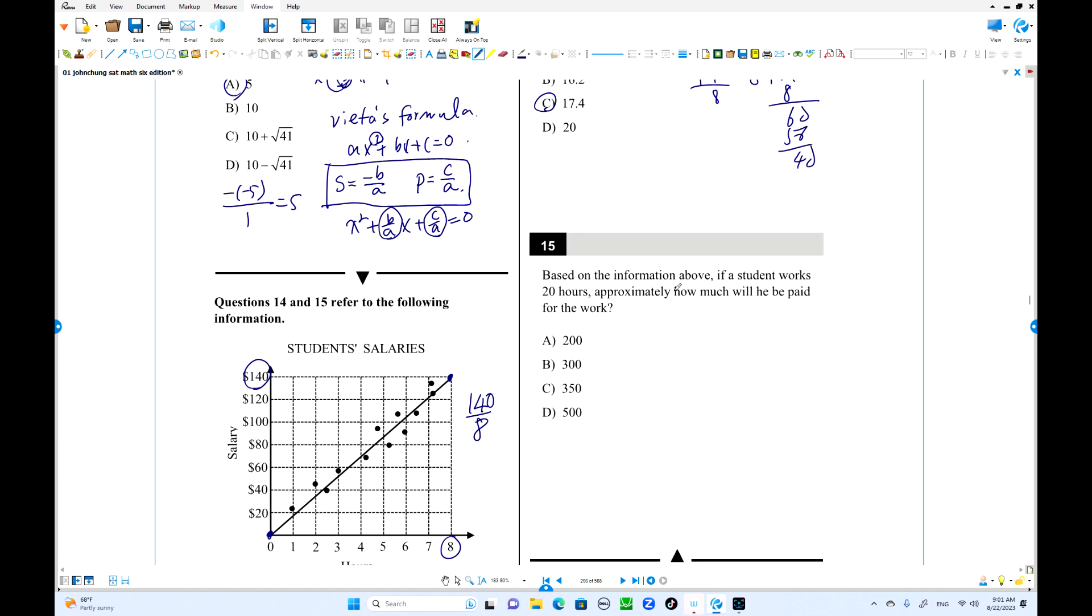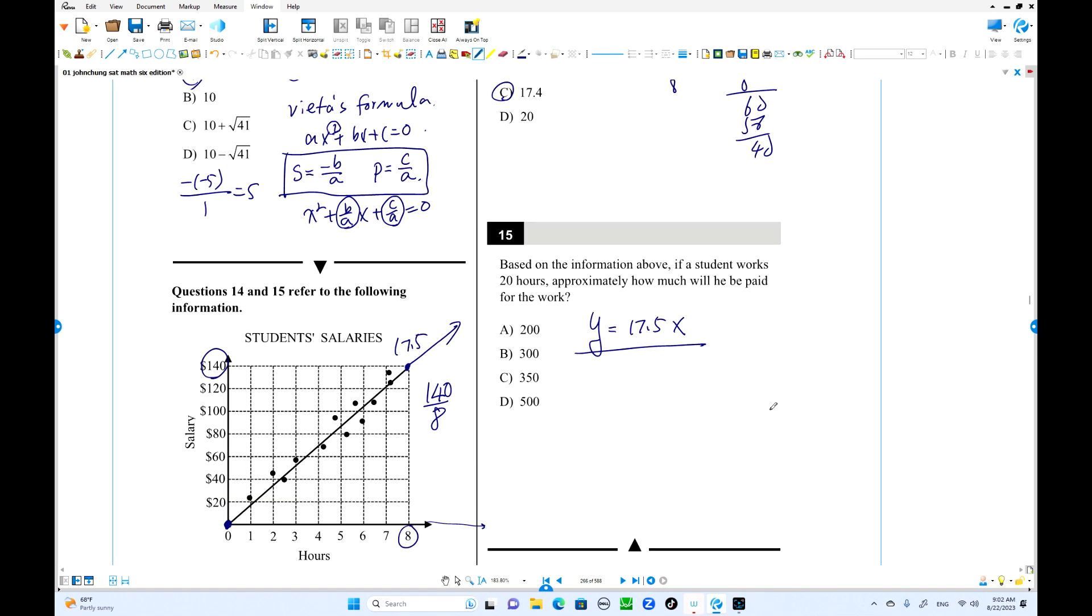And number 15. Based on information about a student work 20 hours. This is 20 hours over here. So we have to use the line of best fit. This slope is 17.5. We did already. 17.5 and passed the origin. The value of Y. That's the salary. If salary equals what? 17.5 and the hours X. I'm going to use X. This is a direct variation. All right? So 20 hours times 20 over here. That's the answer. 17.5 times 20 over here. What? 350. That is the answer of number 15.